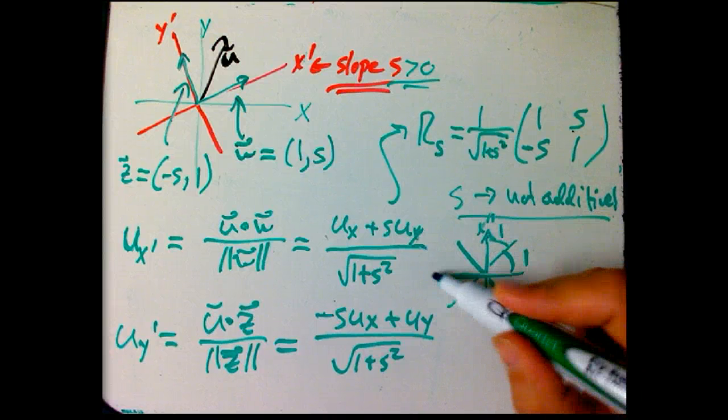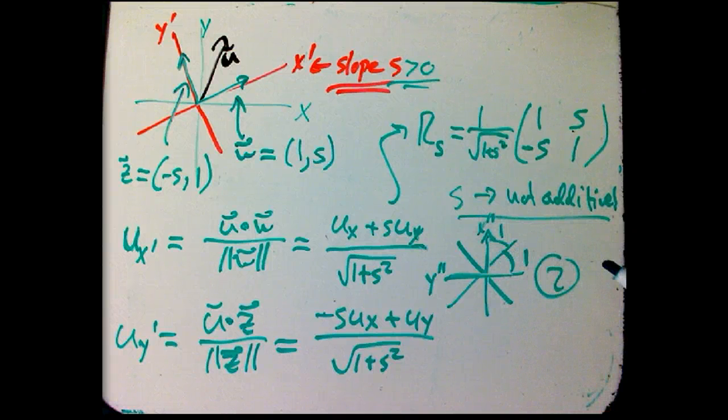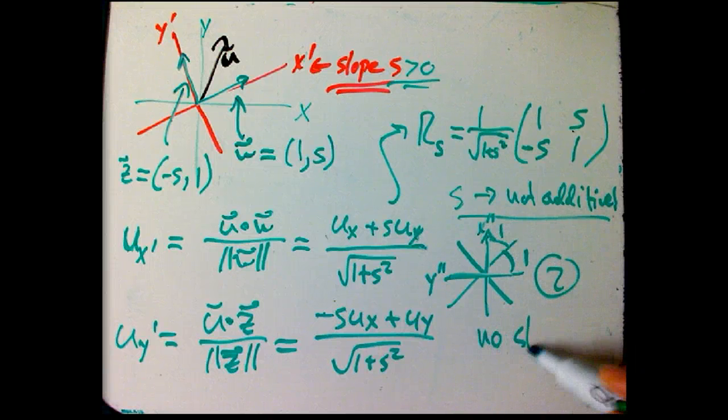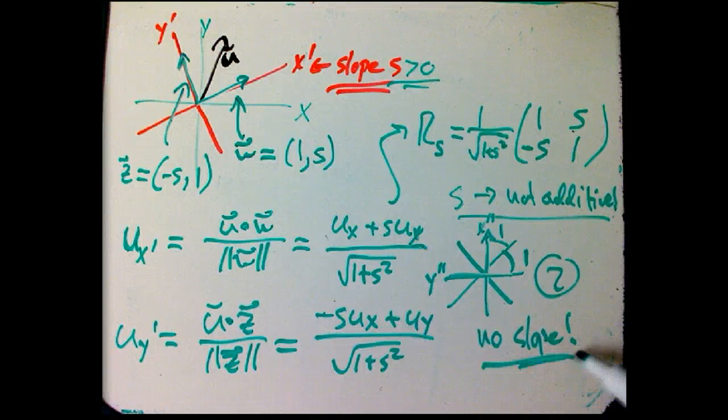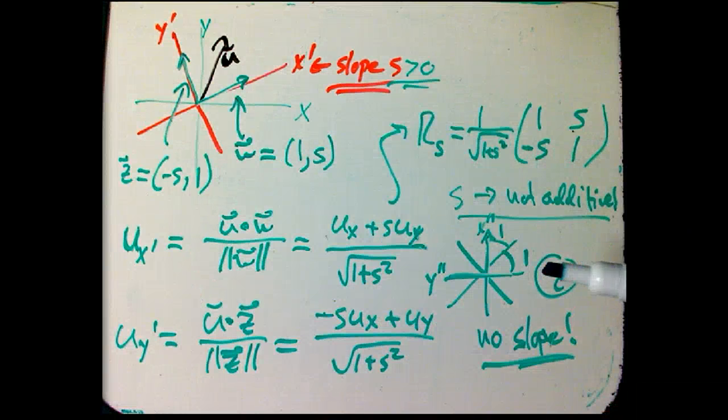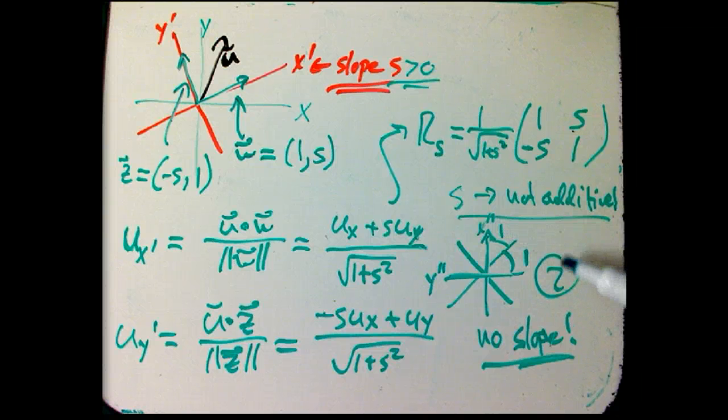So for example, if I rotate with slope 1, and then I rotate again with slope 1, so that this is our new, like this is X prime prime, this is Y prime prime, do I get, is that the same thing as a rotation that corresponds to slope 2? Absolutely not. It's a rotation of 90 degrees. It's actually a rotation that doesn't actually have a slope to define it.